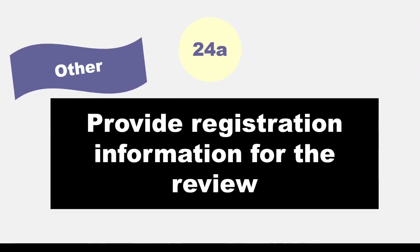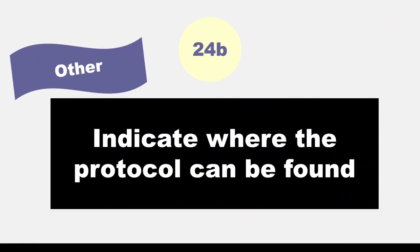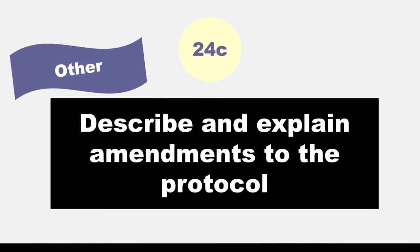Item 24, provide registration information for the review, including register name and registration number, or state that the review was not registered. Remember that you can register systematic reviews in a platform called Prospero. There are other registration platforms such as OSF, or Open Science Framework, and yet others. Make sure you check with your colleagues or ask a librarian where you can register your systematic review. Item 24B asks you to indicate where the review protocol can be accessed, or state that no protocol was prepared. Item 24C asks authors to describe and explain any amendments to information provided at registration or in the protocol.